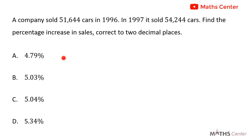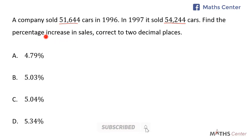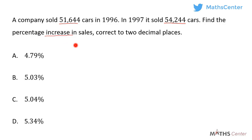This is a multiple choice question, so we solve the question and after that we will pick the correct option. In 1996 the company sold 51,644 cars and in 1997 it increased to 54,244. We are going to use this information to calculate the percentage increase. The percentage increase will be equal to the change divided by the original value times 100.